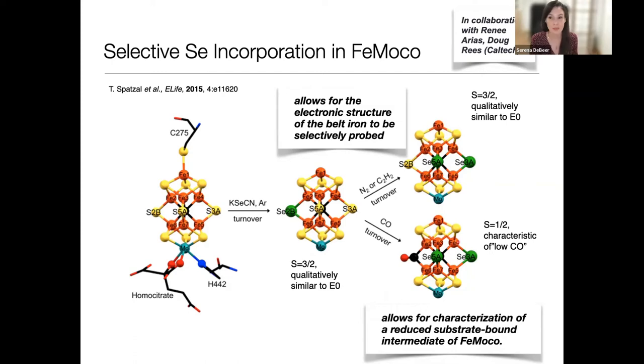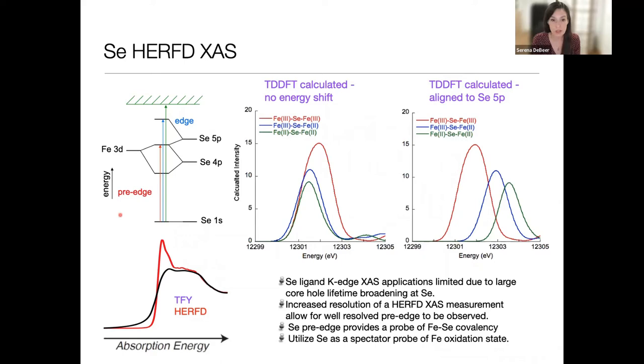This allows us to characterize a reduced substrate-bound intermediate of FeMoCo, because CO can only bind after reduction. Our method of choice is selenium-HERFD. We look at the selenium 1s to 4p transition. Normally selenium would have no pre-edge for fully reduced selenide, but when it interacts with an open shell iron, which is 3d, we see these pre-edges. The intensity of these pre-edges is indicative of how much hole character the iron has. If the irons are very oxidized, we see a lot of hole character. As we reduce it, the intensity goes down. The energy of these pre-edges, when aligned to the rising edge, shows how the d-manifold gets pulled down as the iron becomes more oxidized.